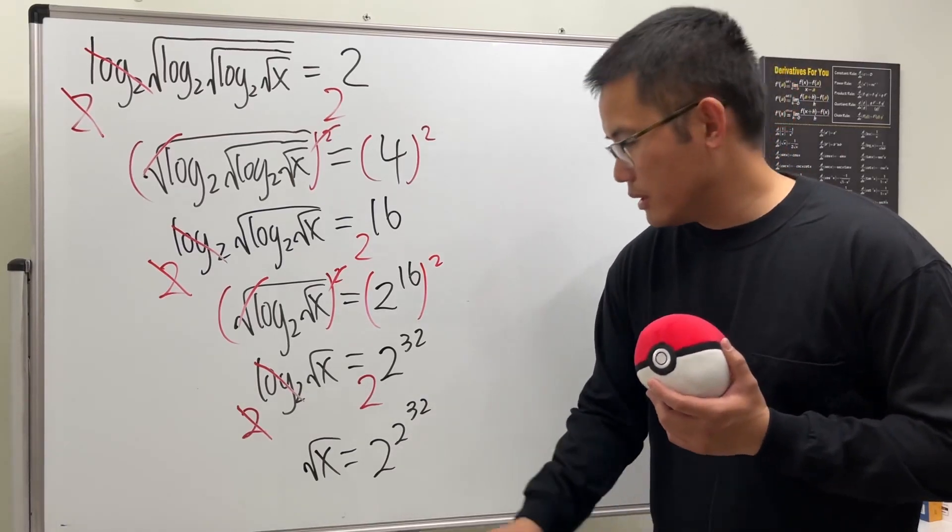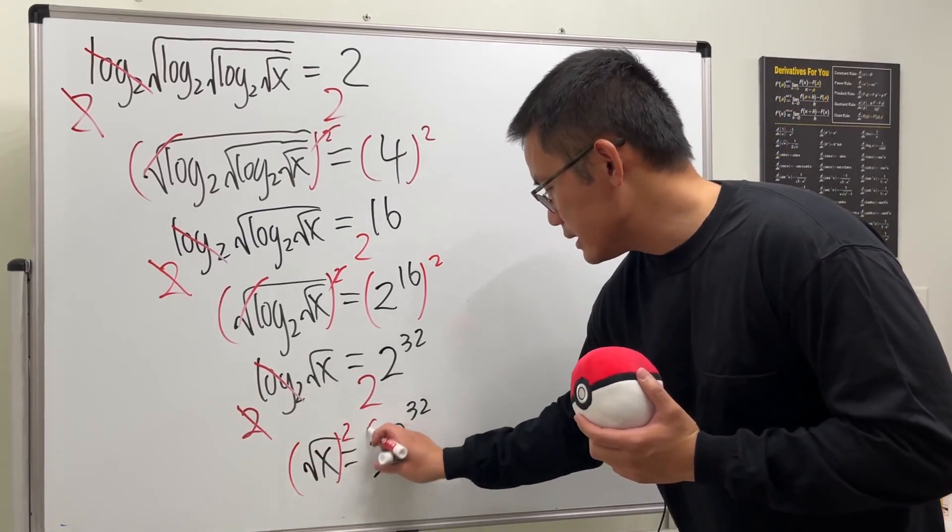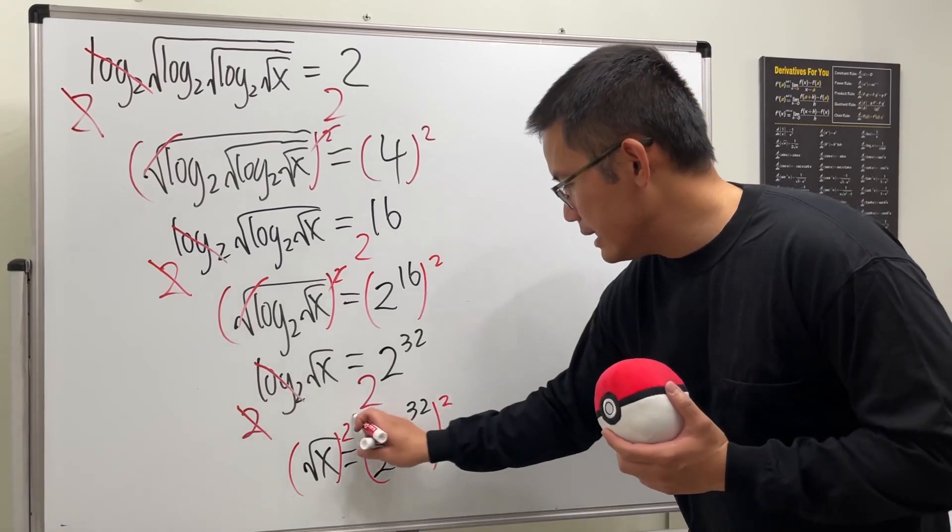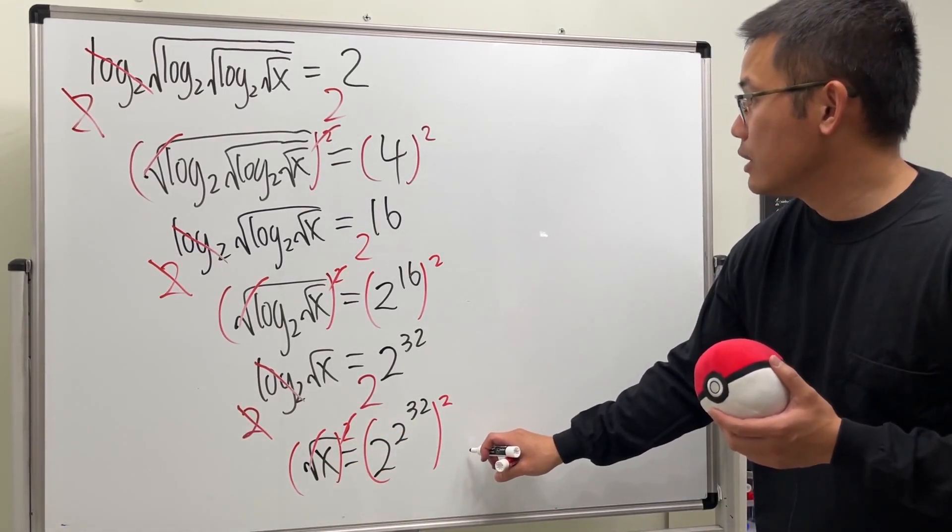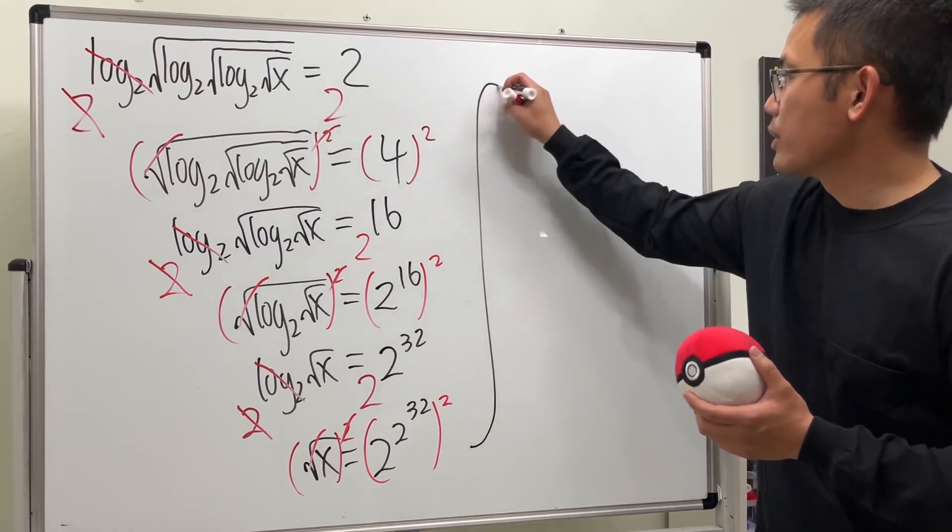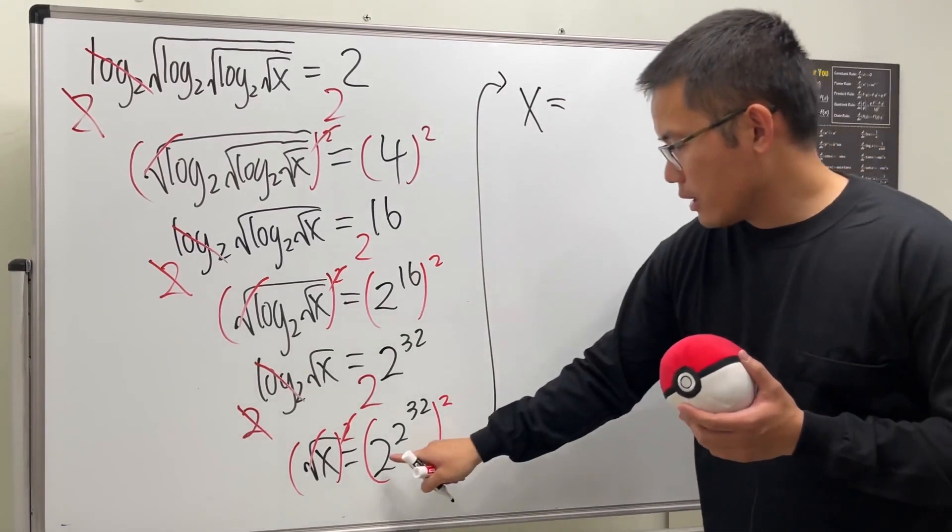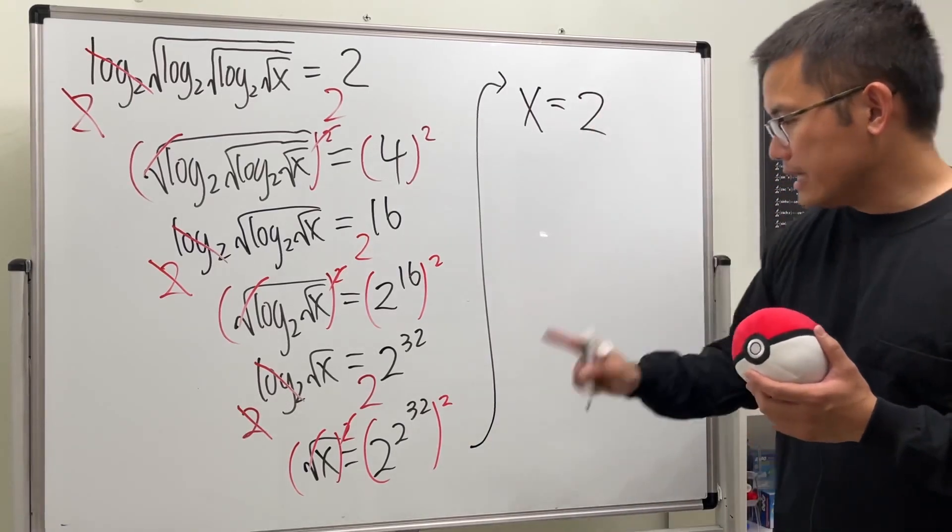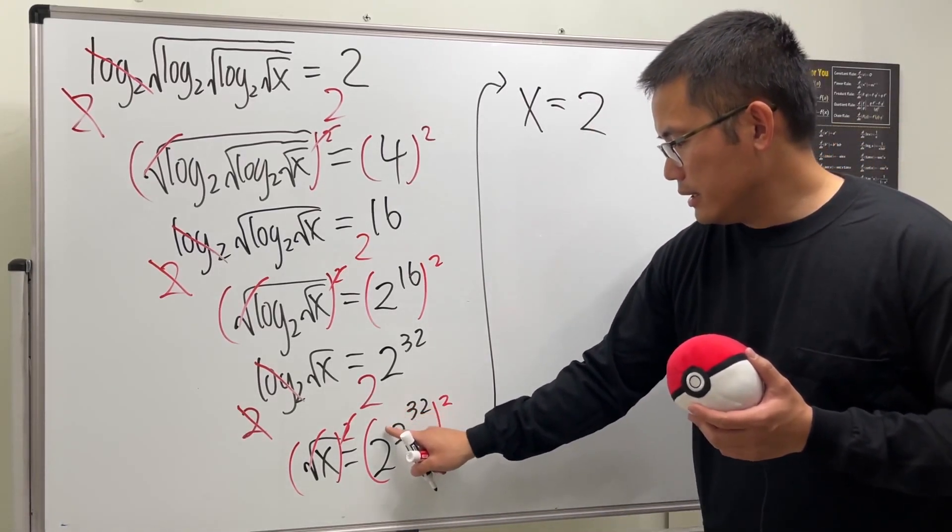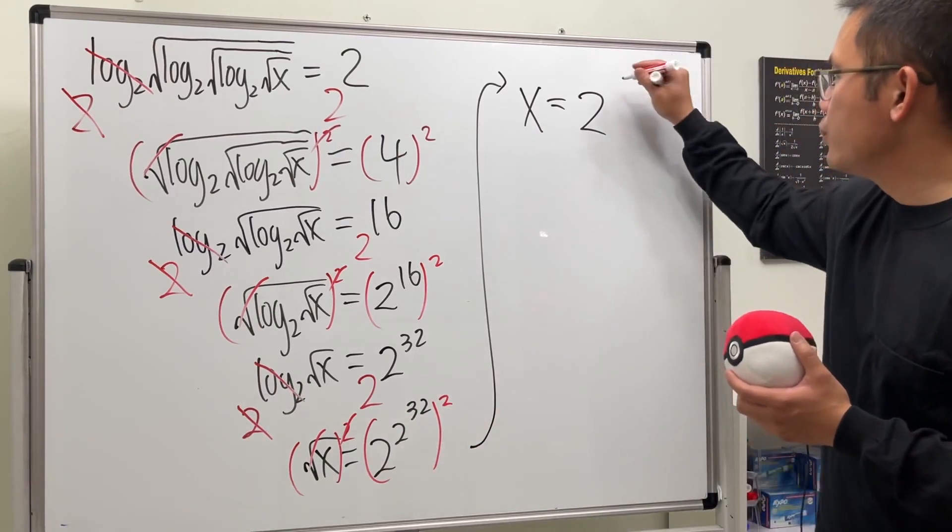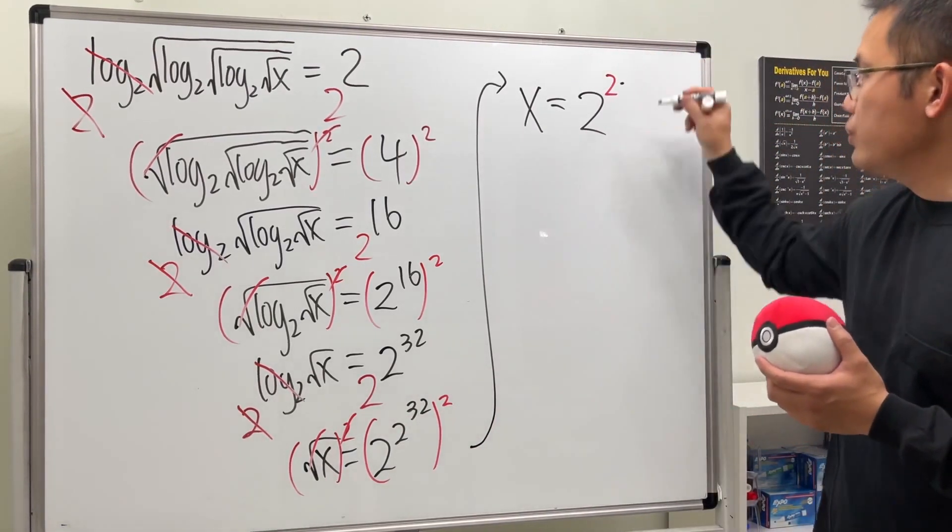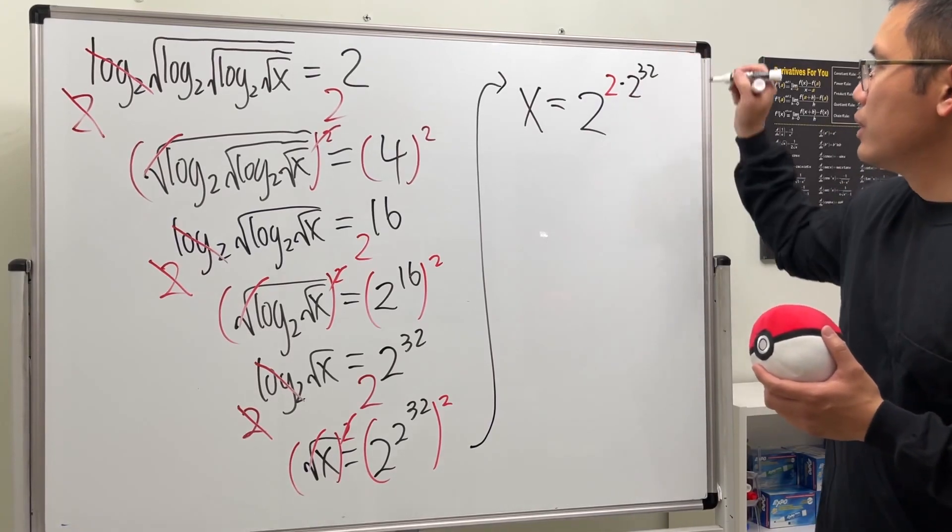We're almost done. Square both sides and this and that cancel. I would like to just tell you, perhaps I'll write it down here, x is equal to 2, but again this is the power, we just multiplied by this which is 2, so we have 2 right here times 2 to the 32.